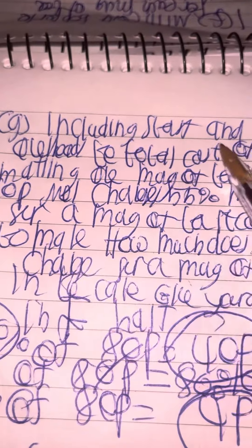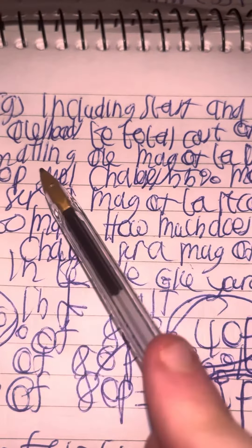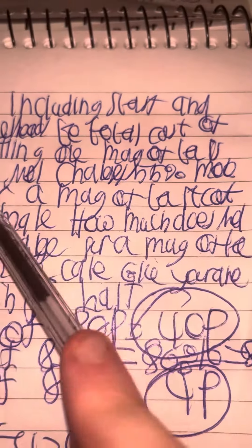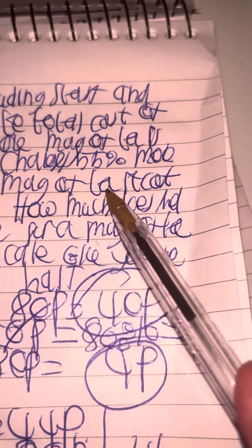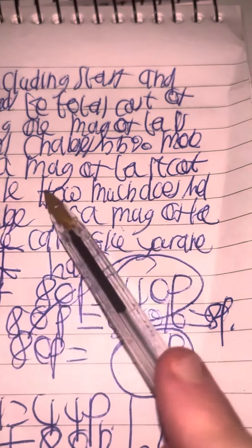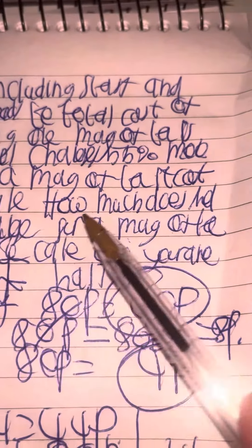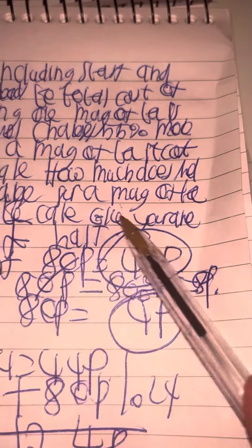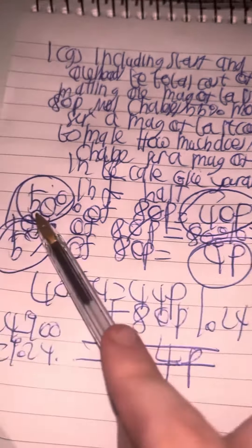Next one. Including staff and overheads, the total cost of making one mug of tea is 80 pence. Male charges 55% more for a mug of tea than it costs to make. How much does male charge for a mug of tea in the cafe? Give the answer in pounds.